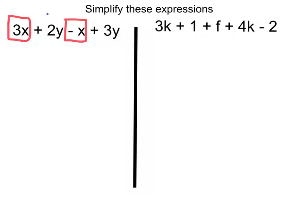Now I'm going to do the y's in blue and make that a circle. So I get plus 2y and plus 3y. Note how I am including the sign in front each time.